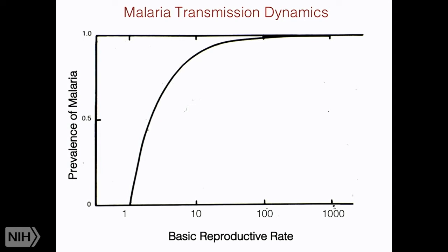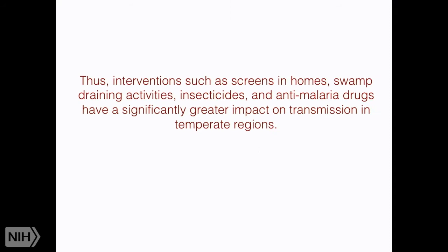Here is a graphic illustration: basic reproductive rate and prevalence of malaria. If we're in Sub-Saharan Africa where R-naught is very high and we have an intervention that decreases the number of new cases from an old case, we haven't done much to the prevalence. But if we're in the temperate region where R-naught is lower, interventions have much greater impact. Interventions such as screens in homes, swamp-draining activities, insecticides, and anti-malarial drugs have a significantly greater impact on transmission in temperate regions.